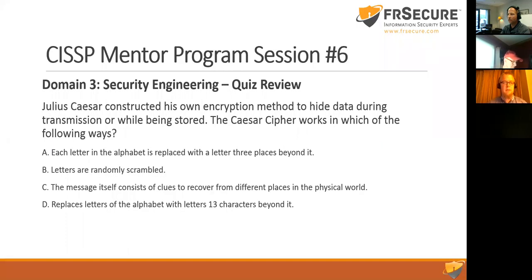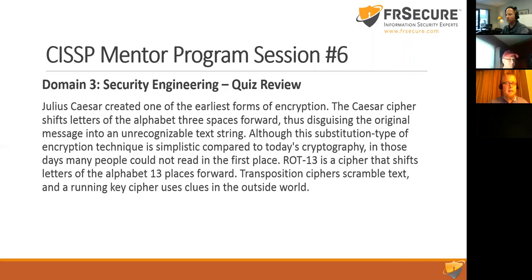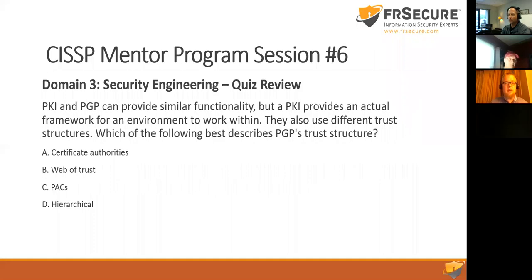Quiz question one: Julius Caesar constructed his own encryption method to hide data. The Caesar cipher works by replacing each letter with a letter three places beyond it in the alphabet. The correct answer is A. A brief explanation will be included in the notes.